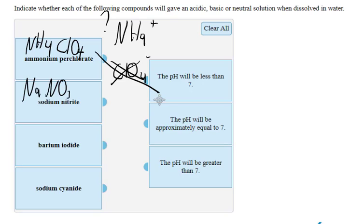Sodium nitrite. Sodium is a group 1 metal and contributes no acid-base chemistry, therefore will not affect the pH.